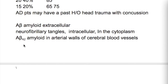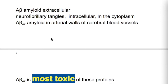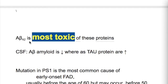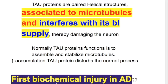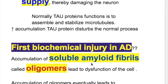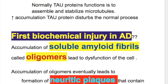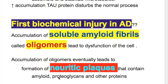A-beta 42 amyloid is found in the arterial walls of cerebral blood vessels and is the most toxic of these proteins. The first biochemical injury in Alzheimer's disease is the accumulation of soluble amyloid fibrils called oligomers, which lead to cellular dysfunction and eventually to the formation of neuritic plaques containing amyloid, proteoglycans, and other proteins.